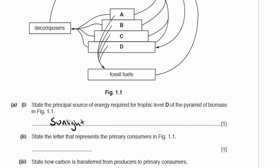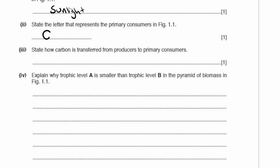State the letter that represents the primary consumers in figure 1.1. D is the producers, and C are the primary consumers that feed on the producers, so the answer is C. State how carbon is transferred from producers to primary consumers — the primary consumers eat the plants, so that is ingestion.